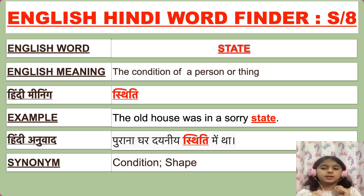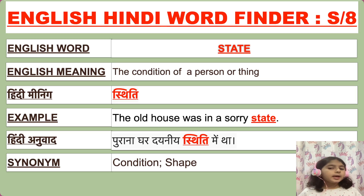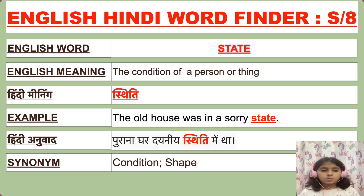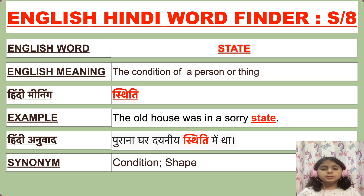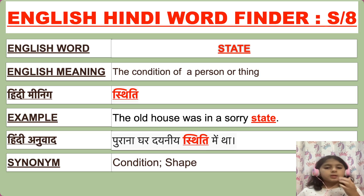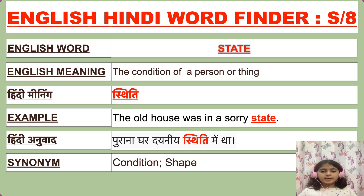Our next English word is 'state.' The English meaning of state is the condition of a person or thing. State ka Hindi meaning hai sthiti. For example: 'The old house was in a sorry state.' Ishi Hindi mein bolenge: 'Purana ghar dayaniye sthiti mein tha.' Synonyms of state are condition and shape.